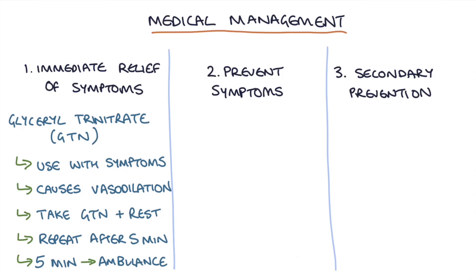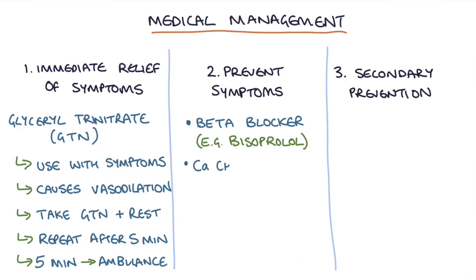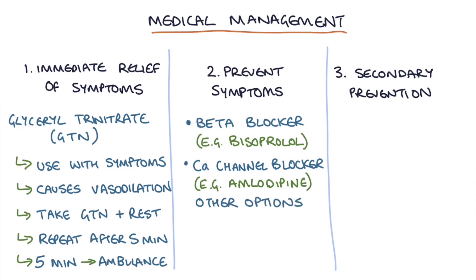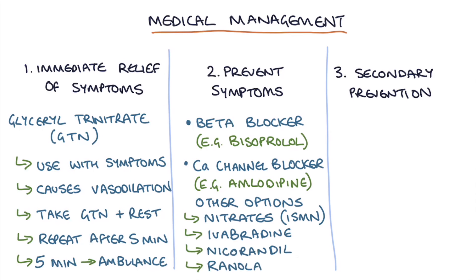Long-term symptomatic relief is achieved with either a beta blocker such as bisoprolol 5mg once a day, or a calcium channel blocker such as amlodipine 5mg once a day. It's possible to use a combination of both if symptoms are not controlled with one. Other options include long-acting nitrates like isosorbide mononitrate, ivabradine, nicorandil, or ranolazine, but these would typically be initiated by a cardiologist.